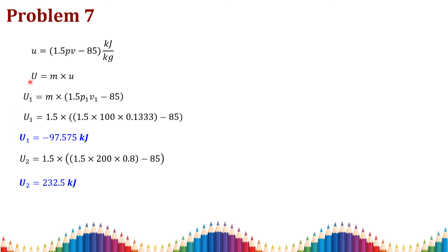For the final state: U2 = m × (1.5 × p2 × v2 − 85), substituting v2 = 0.8 m³/kg. Solving gives U2 = 232.5 kJ. Comparing U1 and U2, the maximum internal energy attained during the expansion is U2 = 232.5 kJ.